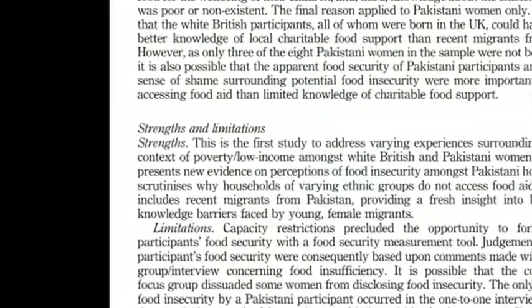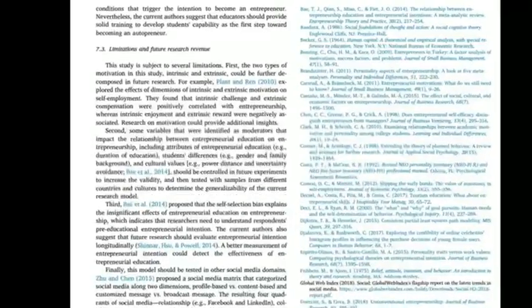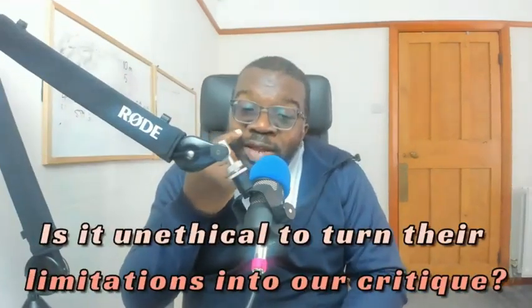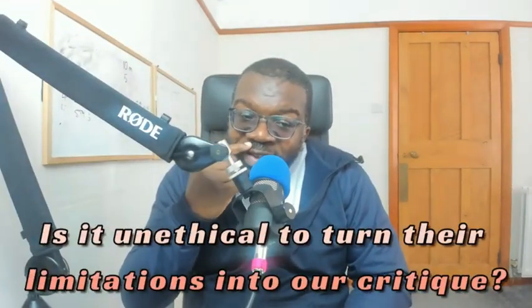Where are the limitations found? You can find them towards the end of the article, and some articles even have a dedicated limitations section. Have we been unethical — have we cheated? I do not believe so. Sometimes the limitations are hard to find; we need the authors to be transparent so we can critique their admission. It is essentially our judgment versus their judgment — some scholars may believe their limitations do not impact the findings and that their study is still valid.